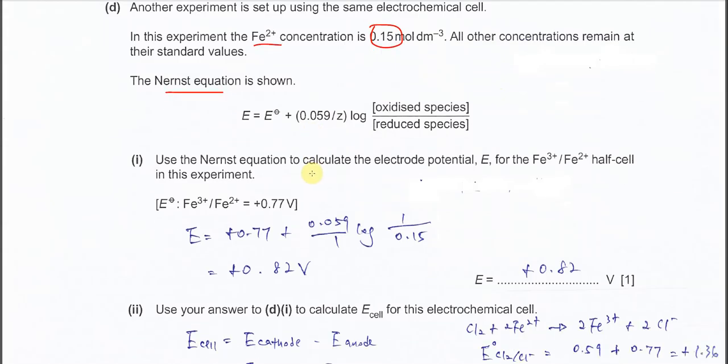Calculate E, the potential of the half-cell—not the standard potential, but the potential of the Fe³⁺/Fe²⁺ half-cell. We know the oxidized species is Fe³⁺, one molar per dm³. The reduced species is Fe²⁺. We substitute the concentration given: 1 over 0.15. Here is 0.059 over Z. The Z in this half-cell is 1.